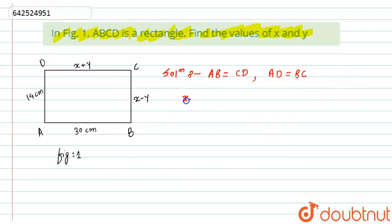Now from here I can write x plus y is equal to 30. Let this is equation number one. Similarly, I can say that x minus y is equal to 14. Let this is equation number two.